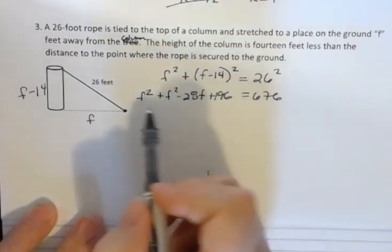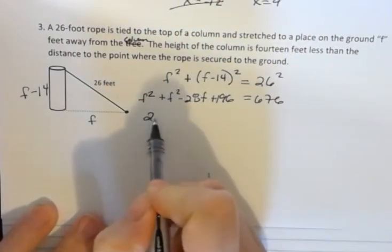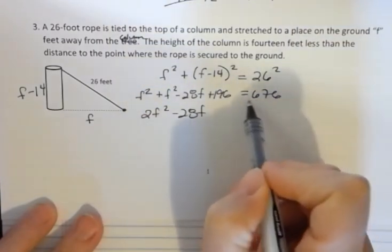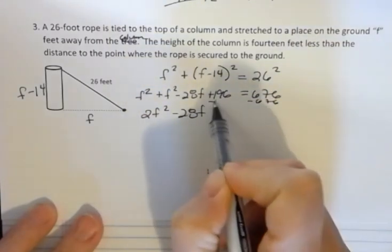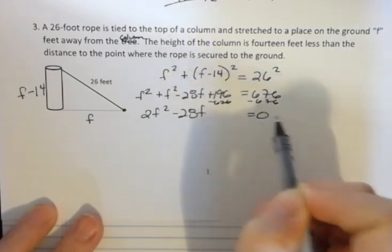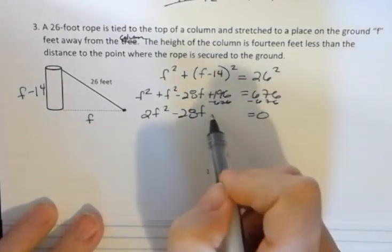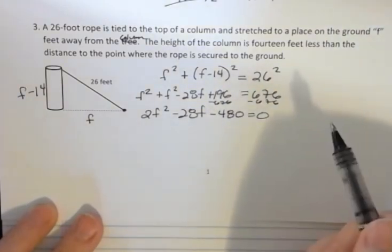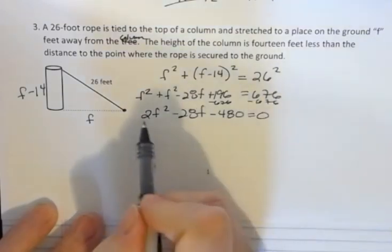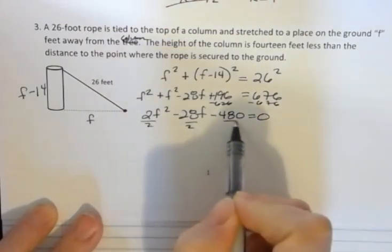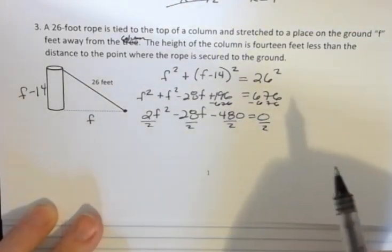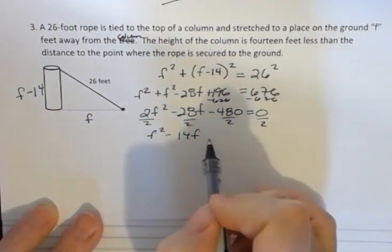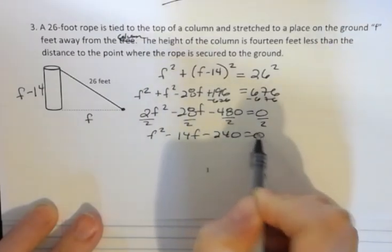So we're doing the same thing I did before. I'm going to combine this up. 2f squared minus 28f. We're going to subtract 676 from both sides getting zero over there. That's going to give us negative 480. Now I can go ahead and divide everything by 2. The last time I factored out the 2 but this time I want to show you what I can also do because I have an equation is just get rid of that 2. f squared minus 14f minus 240 equals 0.